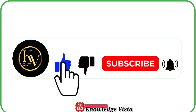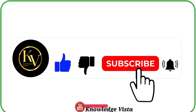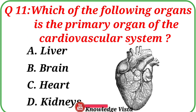Question No. 11. Which of the following organs is the primary organ of the cardiovascular system? Your options are: A. Liver, B. Brain, C. Heart, D. Kidneys. Correct answer is option C: Heart.